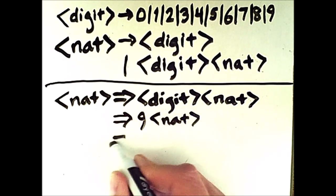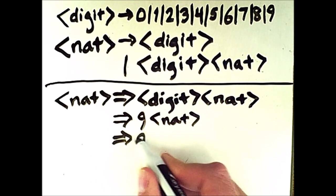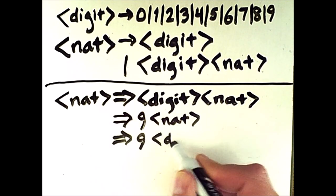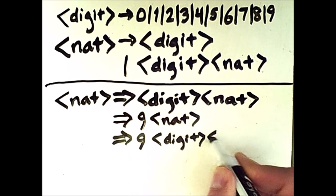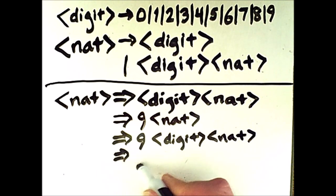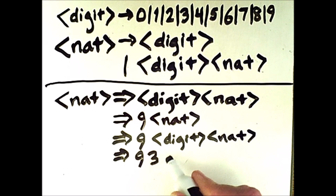And at the next step, I will have to expand the NAT, because 9 is a terminal and can no longer be expanded. So this will expand to digit NAT, and at the next level, I'll have to pick a terminal for that digit, and I will pick 3.